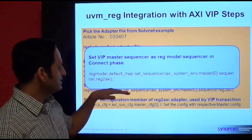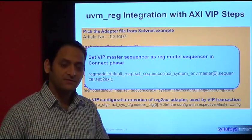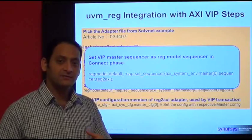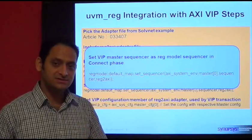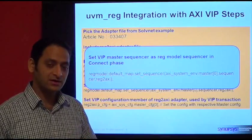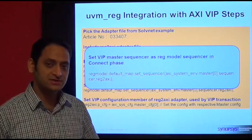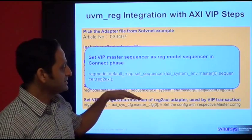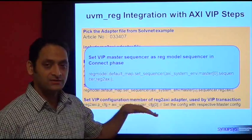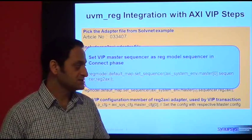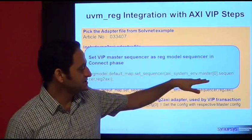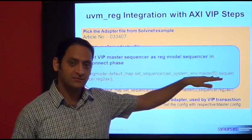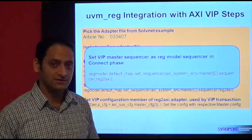Then you need to set a sequencer for the register model, so that all the register commands executed or defined by the user in the register sequence get converted into protocol-specific transactions using that specific master instance sequencer, which you have set the connection over here.